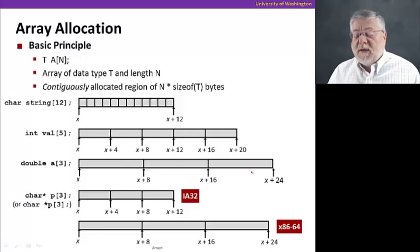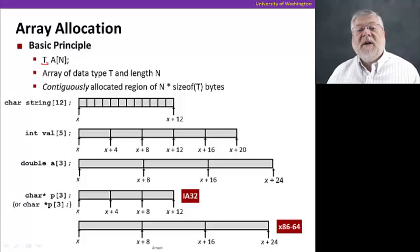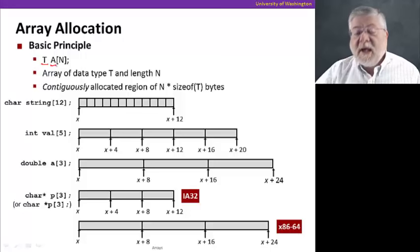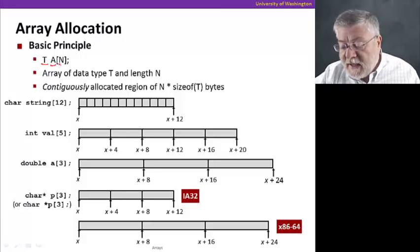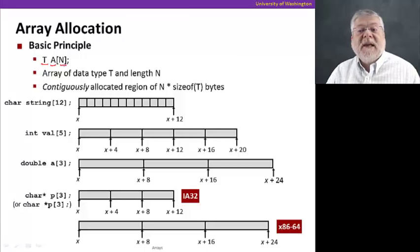We'll begin with arrays, and the basic idea behind arrays is that they have elements of a certain type T. The array has a name A, and then it has a number of elements, or a length N. This leads to a contiguously allocated region of memory that is of size N times the size of that data type. So if these were ints, it would be 4 times N in bytes, because ints are 4 bytes each.